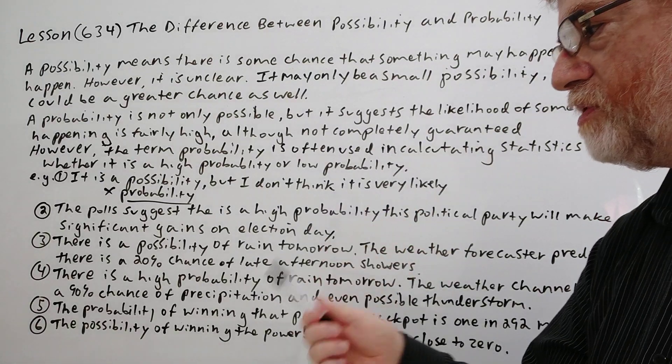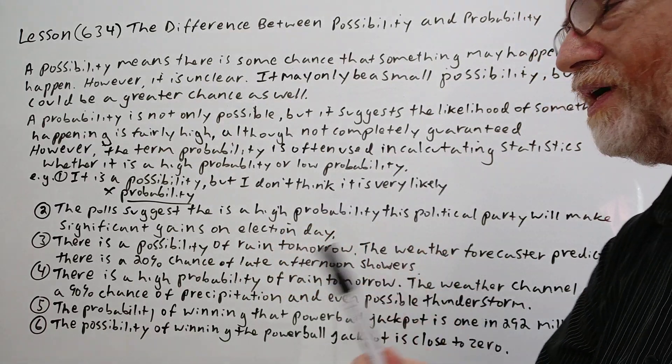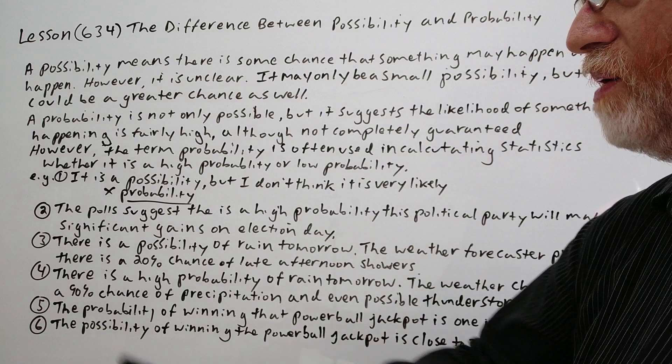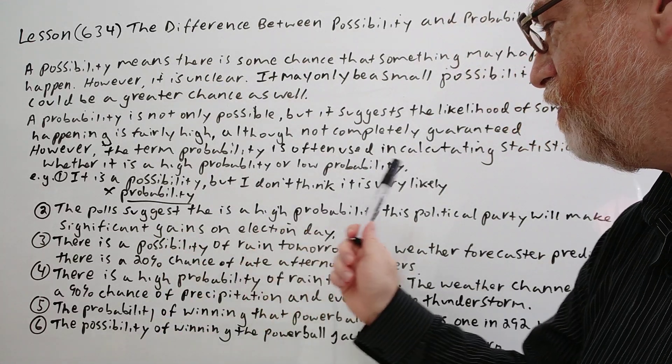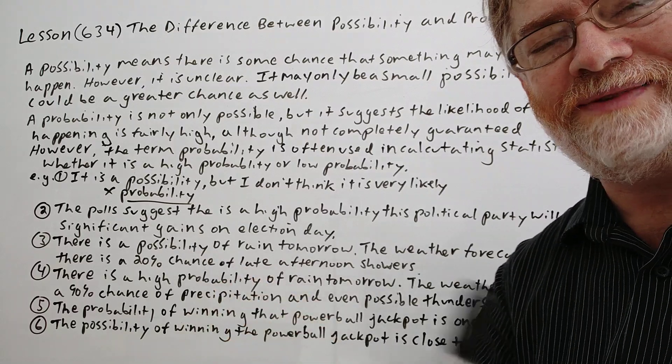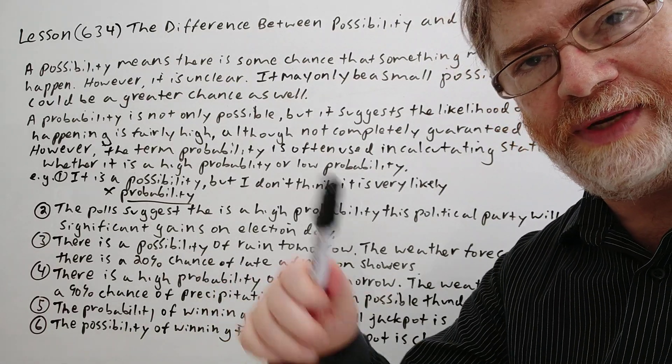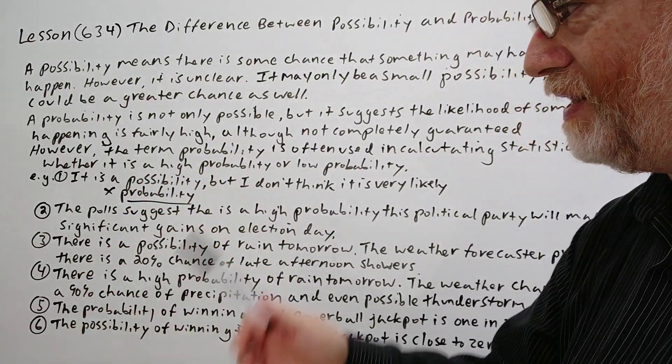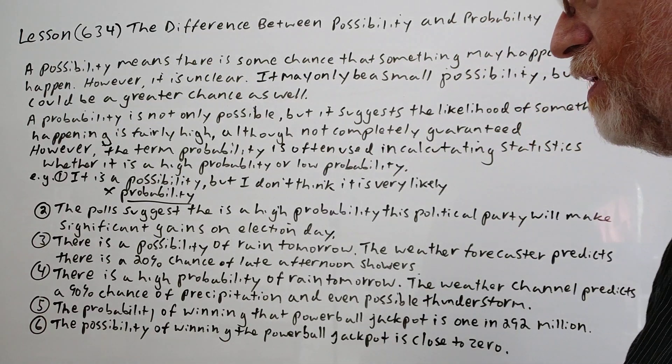We've got several examples here to show just how it's used. Here's the first one: It is a possibility, but I don't think it is very likely. Sometimes people say that. This is one where you probably definitely won't use probability because if you're just saying I don't think it is very likely, it kind of knocks out probability because when you say probability, it tends to usually mean that it is more likely. So in this case, only possibility would probably be used.